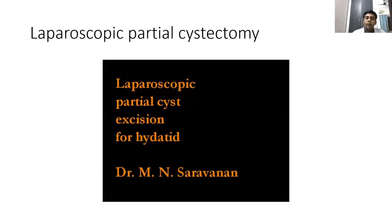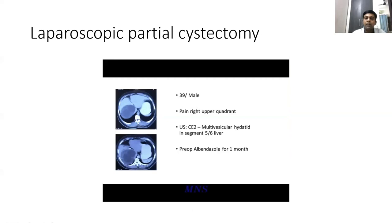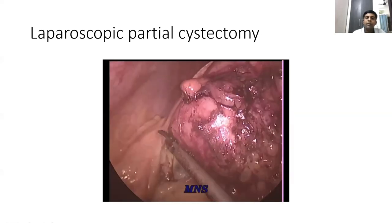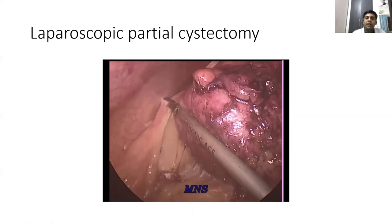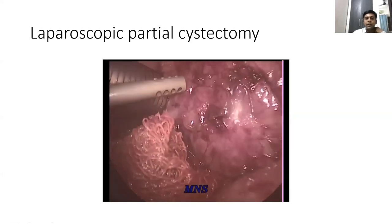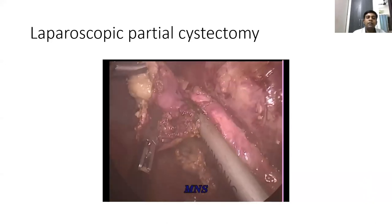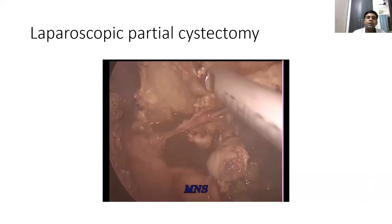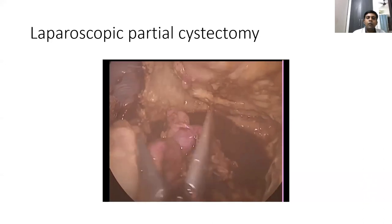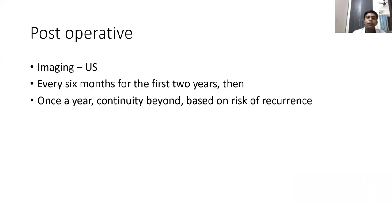Second video: Partial cystectomy in a 39-year-old male with a CE2 hydatid cyst in segments 5 and 6. The omental adhesions on the inferior side are released. A trocar port is introduced inside, cyst contents are emptied, and the cavity is checked for bile — the yellow color seen is from povidone iodine used for sterilization. After emptying, the cyst wall is partially excised.